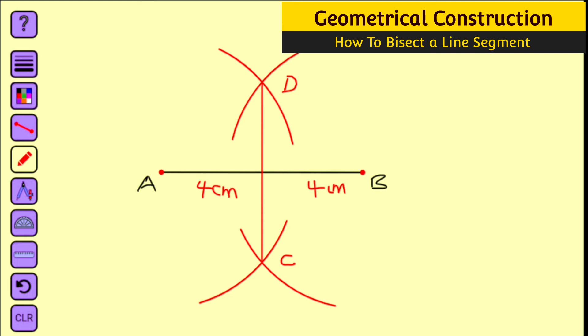To confirm that, you can use your ruler to measure from A to the intersection, we can call it E, where the two lines intersect. If it is four centimeters, you're good to go. Otherwise, you have made something wrong.